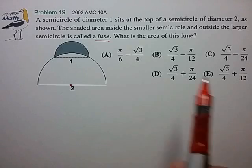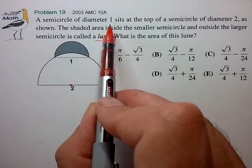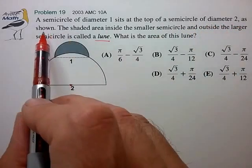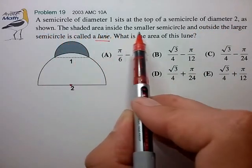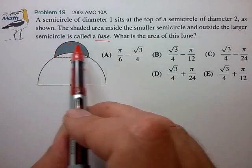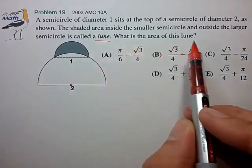So let's see what we have. A semicircle of diameter one sits atop a semicircle of diameter two, as shown, and the shaded area inside the smaller semicircle but outside the larger semicircle is called a lune. What is the area of this lune?